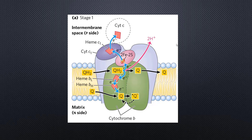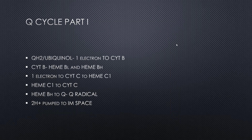The other electron traverses through the two Fe-2S center known as the Rieske iron-sulfur protein, named in tribute to its discoverer Sir John S. Rieske. Here, two iron atoms are coordinated with two histidine residues of the protein. From here, the electron traverses through cytochrome C1, which has a heme C1 group. Cytochrome C1 differs from cytochrome B in that it possesses only one heme group, heme C1, whereas cytochrome B possesses two heme groups, heme BL and heme BH.